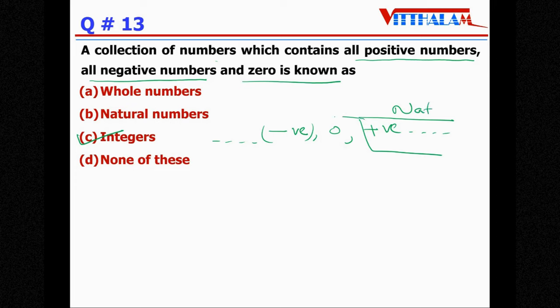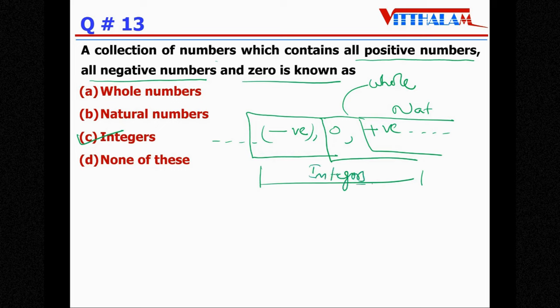Natural number plus 0 is whole, and again negative numbers then this is known as integers. That's what we have discussed.